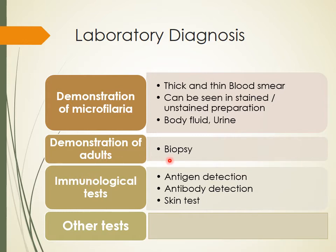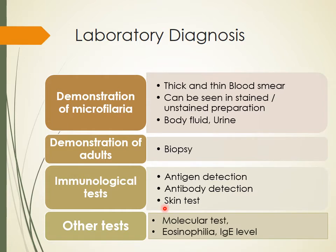Demonstration of adults can be done through biopsy — they are found in the lymph nodes. In immunological tests, antigen detection is very useful. Circulating antigens of microfilaria are detected by ELISA or rapid card tests. Antibody detection can also be done, though it is less sensitive and specific than antigen detection. A skin test, which is a hypersensitivity test, involves injecting filarial antigen intradermally. Molecular tests by PCR can detect the parasite, and indirect evidence includes marked eosinophilia.